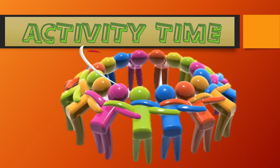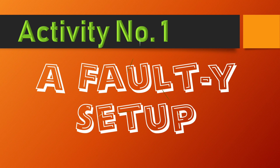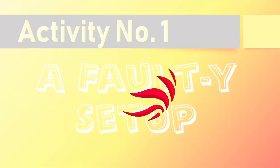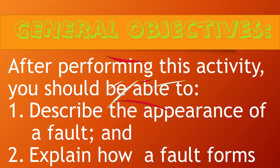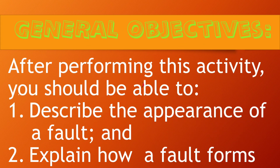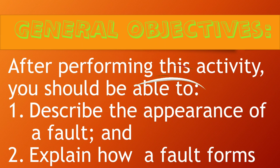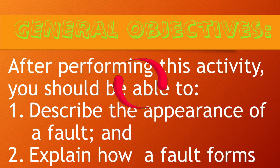The title of our activity is A Faulty Setup. The objectives are, after performing the activity, you should be able to: number one, describe the appearance of a fault; and number two, explain how a fault forms.